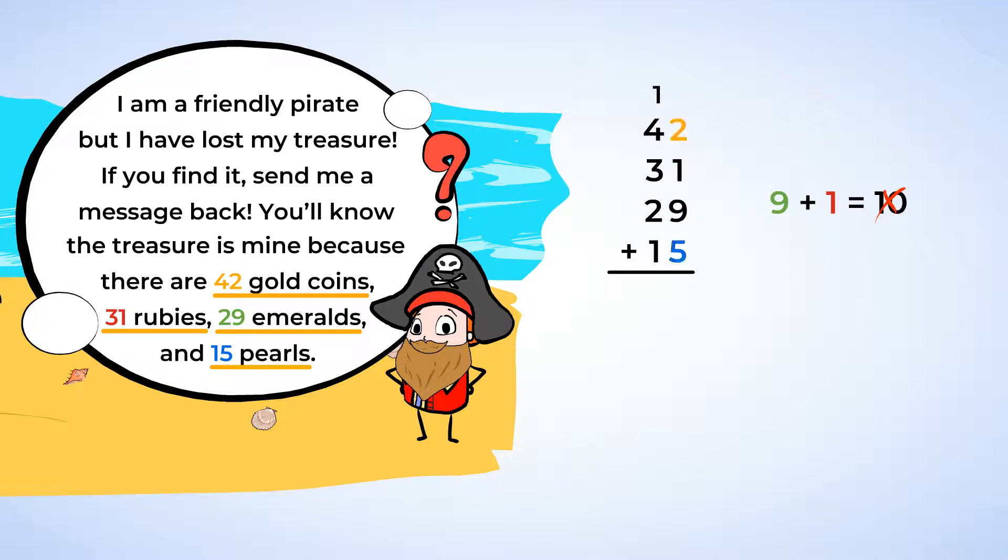Now, add the remaining digits in the ones place. 2 and 5 is 7, so we can put a 7 in the ones place of our answer.